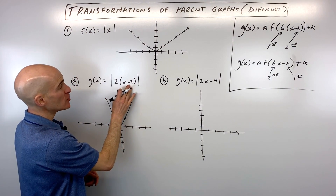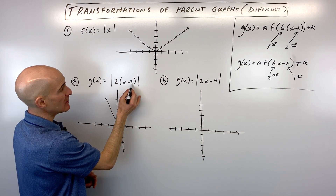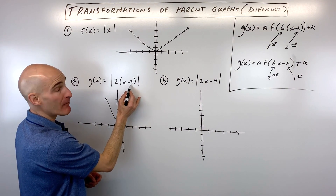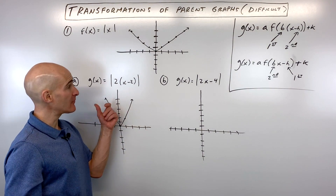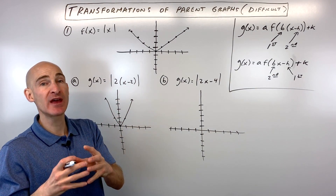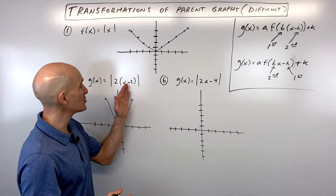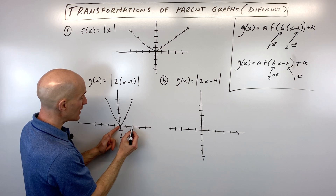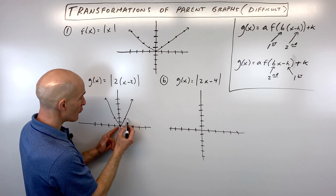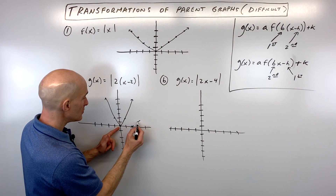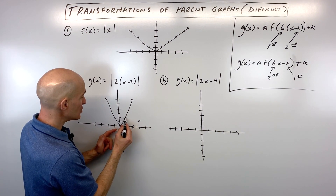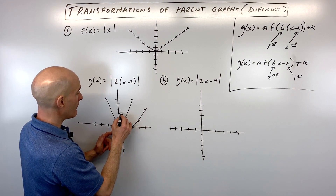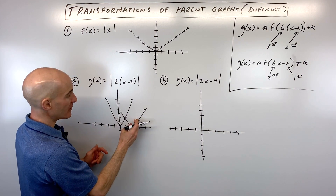Then we handle the h value second. Since it's x minus 2, the graph shifts right 2 — not left, because grouped values have the opposite effect. Each of our compressed points moves right 2, and that gives us our final graph.